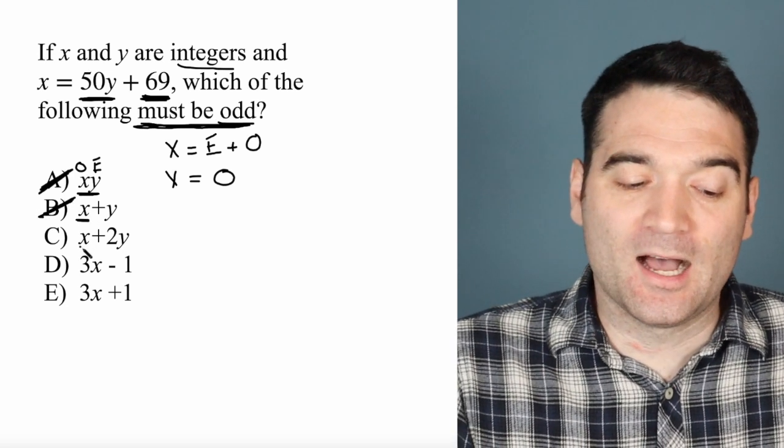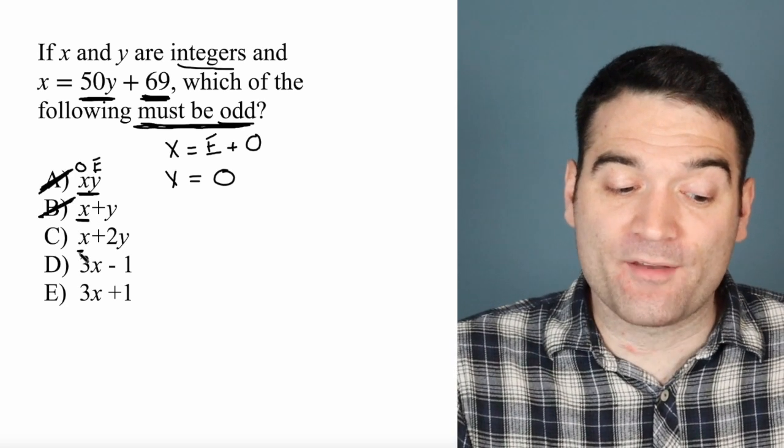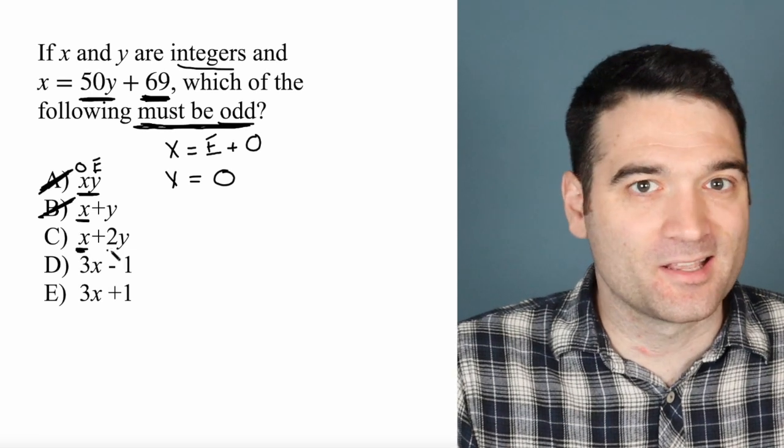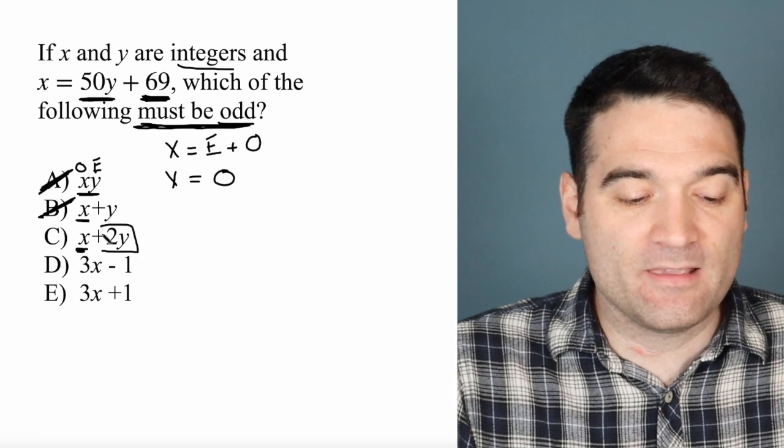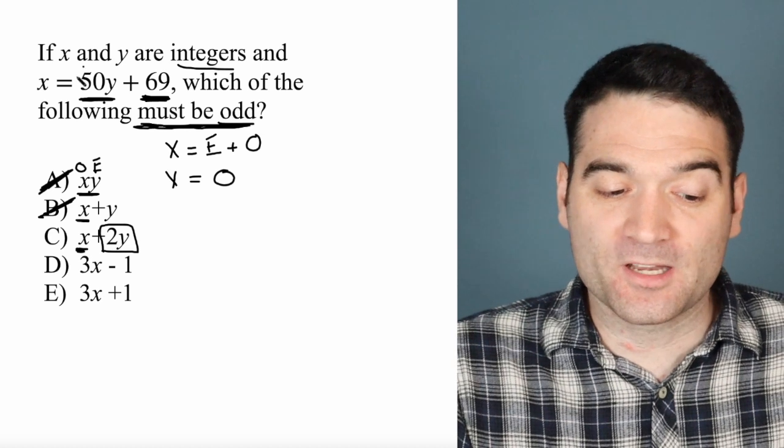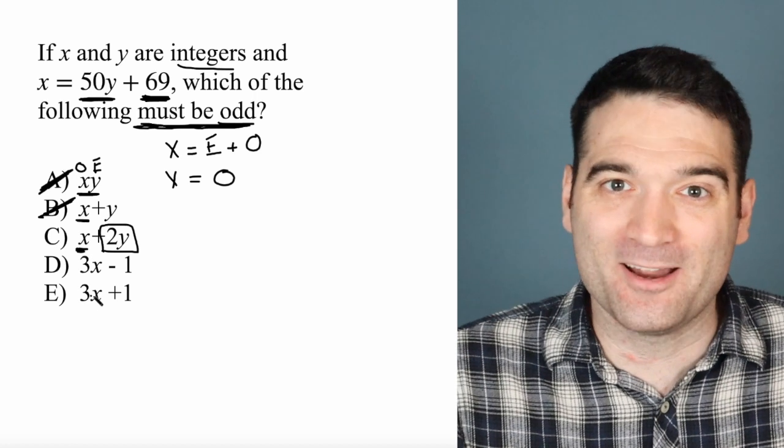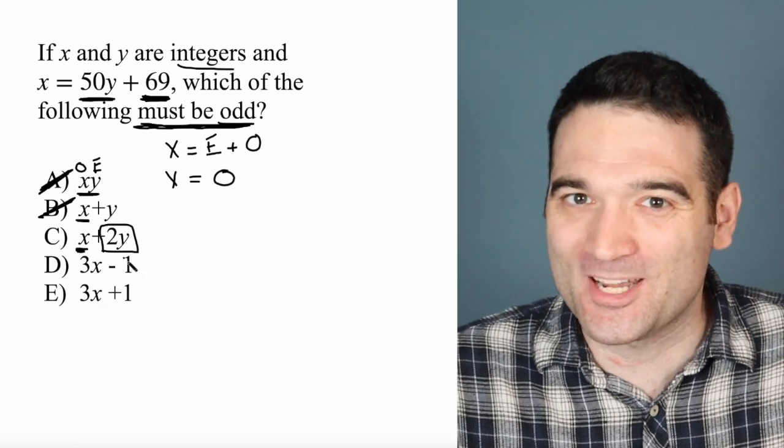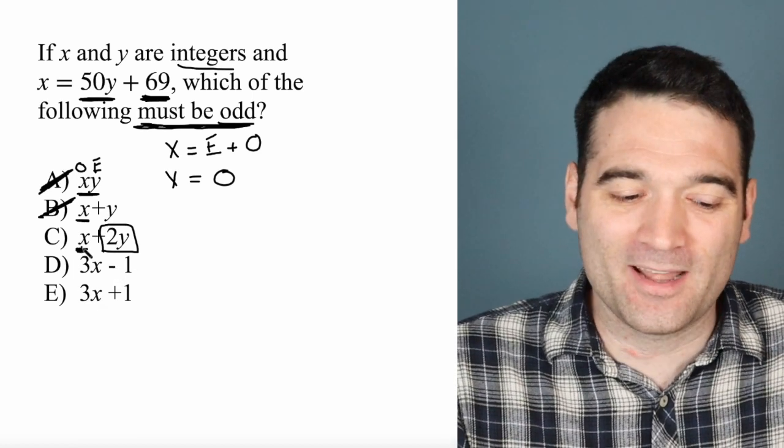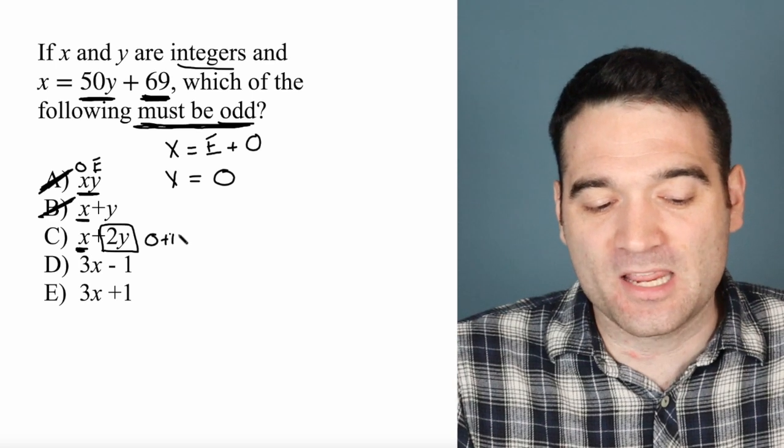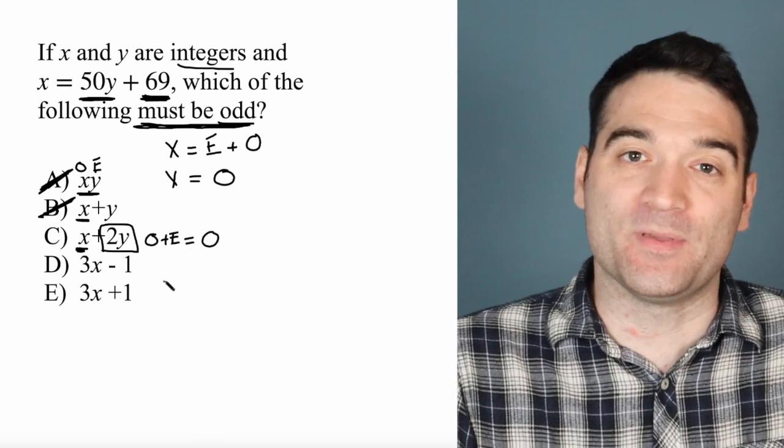How about this one? Well, x is odd. So we have an odd number plus an even number. For the same reason when we multiplied 50 times y, we got an even number. When I multiply 2 by any number, almost by definition, I get an even number. So this is an odd plus an even, which has to be an odd.